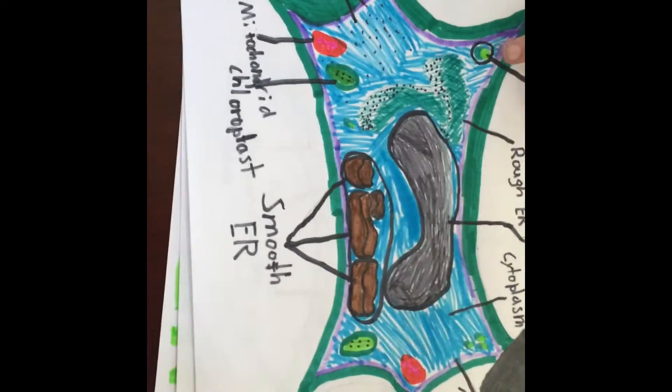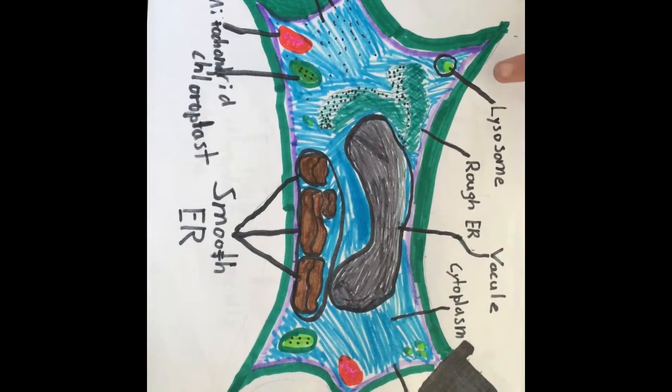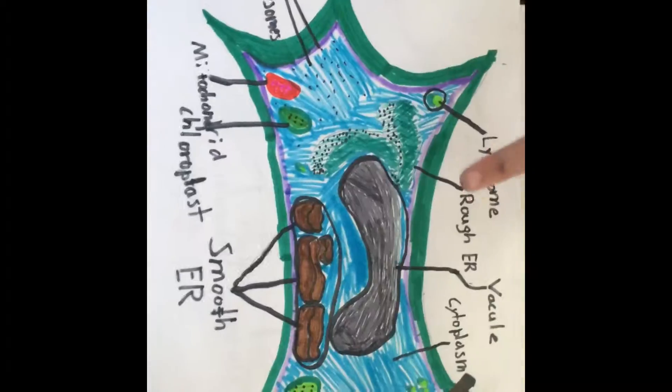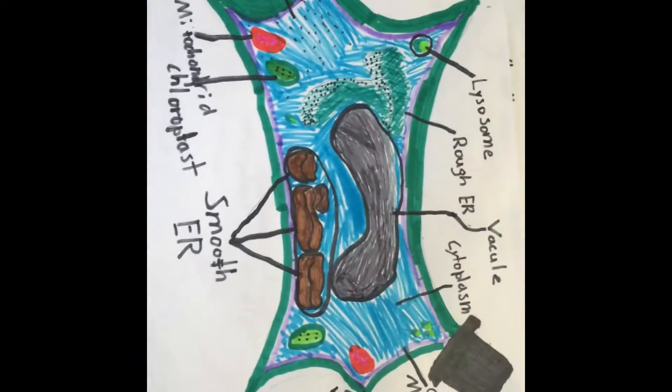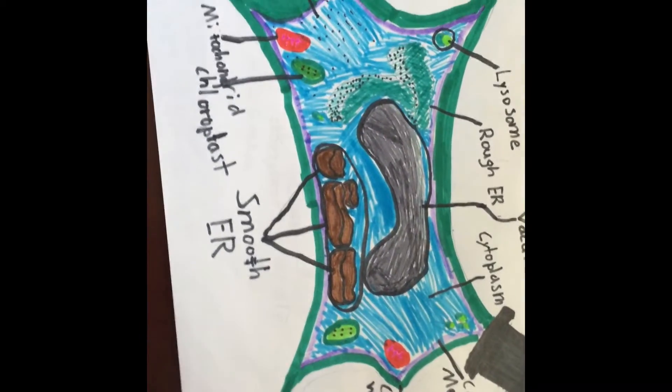And he thought about all of his lysosomes, which broke down all of his millions and trillions of cells' waste, and the endoplasmic reticulum, the smooth and the rough, which prepared proteins for transport to the Golgi apparatus.